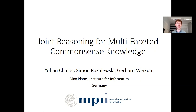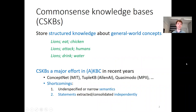Common Sense Knowledge Bases, or CSKBs, are structured knowledge about general world concepts, like that lions eat chicken, that they attack humans, or that they drink water. CSKBs are an area of major attention in automated or manual knowledge-based construction in recent years, with popular projects being ConceptNet, TableKMP, and Osimodo.